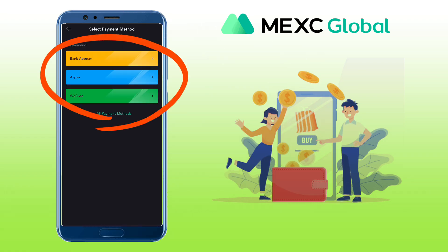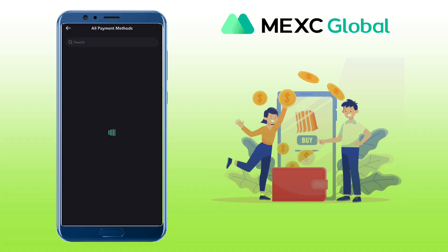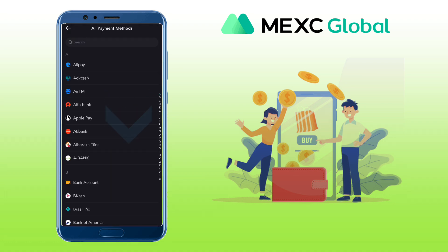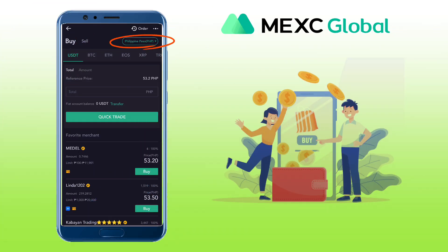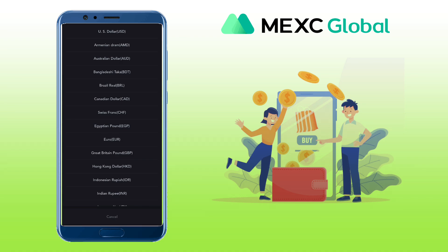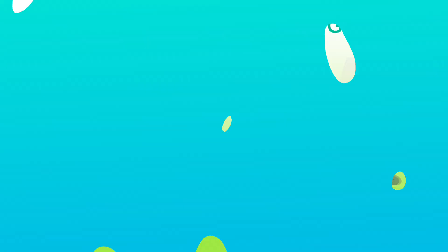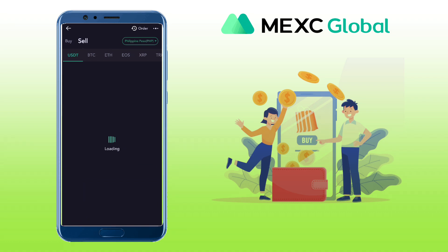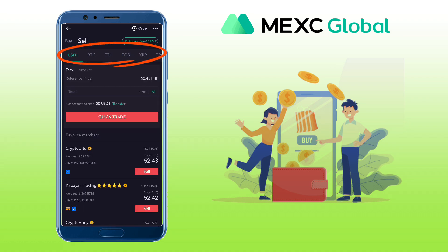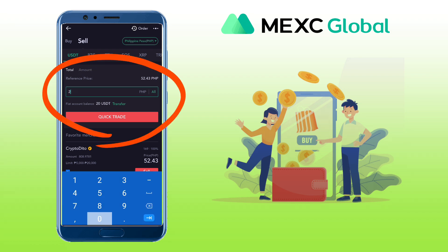Here you can add your bank account, Alipay, WeChat, etc. Click to see more payment merchants — you can scroll down to look for one or search on the search bar. Here you select your fiat currency. Let me pick Philippine Peso (PHP). Make sure you select the Sell tab. Under it, you will see the available crypto you can sell — let me pick USDT.